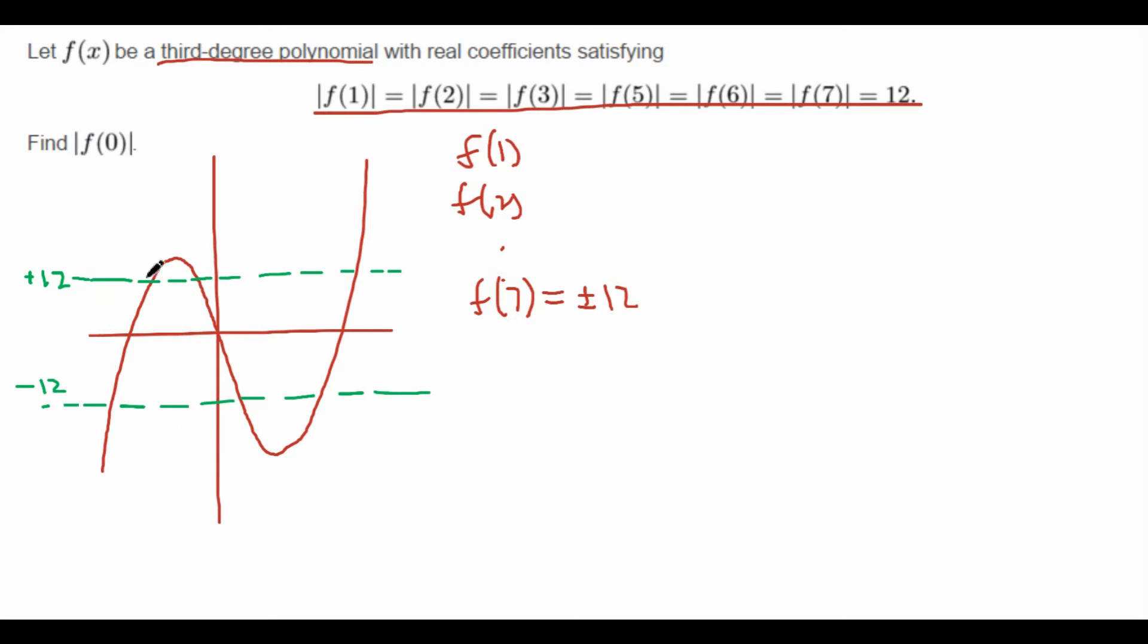So now we're given that these intersections must be at the x-coordinate of 1, 2, 3, 5, 6, and 7, because when x is equal to this value, this f(x) attains plus 12 or minus 12. Thus these must be 1 through 7, excluding 4.